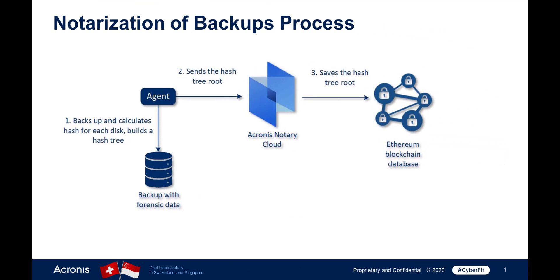When you backup with forensic data, this backup is automatically notarized. This ensures the data backed up forensically is exactly the image taken and was not compromised for proper chain of custody. During the forensic backup, the agent calculates the hash code, builds a hash tree, saves the tree in the backup, and sends the hash tree root to our notary service. The notary service will save the hash tree root in an Ethereum blockchain database to make sure the value does not change.